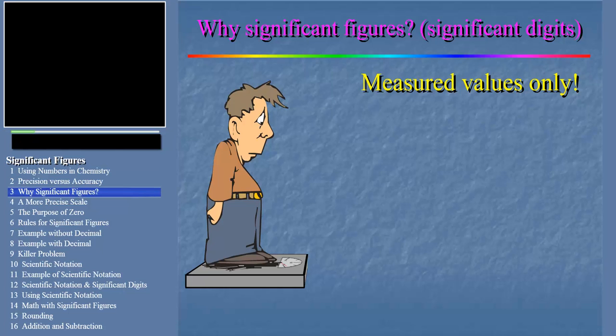Exact numbers would be the number of feet in a mile, for example. When we say that there are 5,280 feet in one mile, we don't assign significant figures to either 5,280 or to one. You see, by definition, these numbers are infinitely precise.